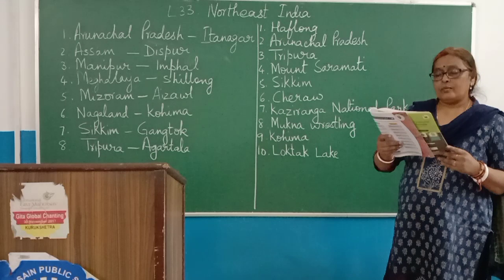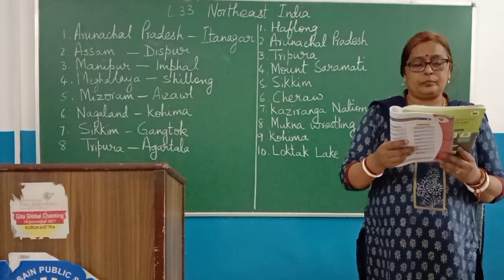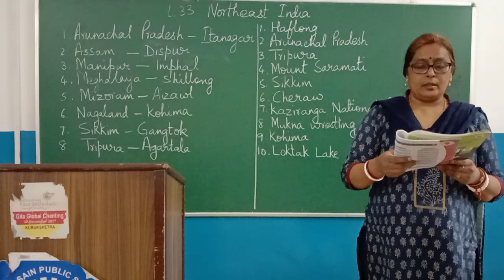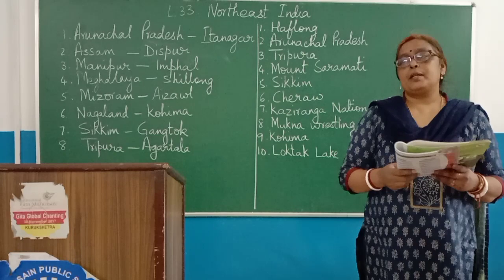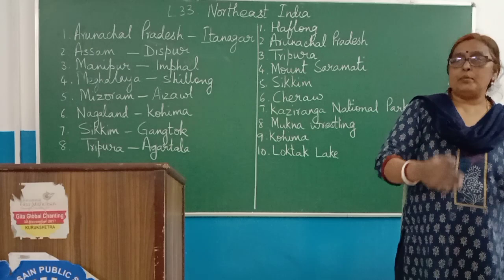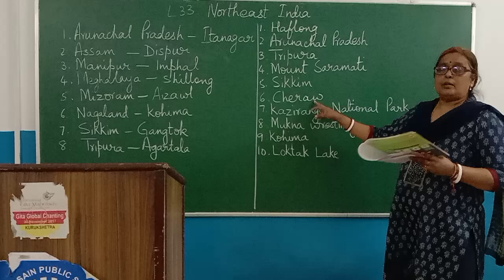In which folk dance of Mizoram do six people squat on the ground holding bamboo poles while six girls dance in between the bamboos, which are rhythmically parted and struck against one another? The answer to this folk dance is Cheraw.